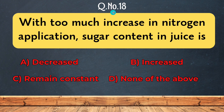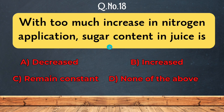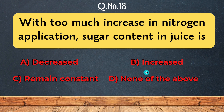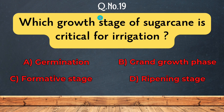Question 18: With too much increase in nitrogen application, the sucrose content of sugarcane — is decreased, increased, remains constant, or none of the above.